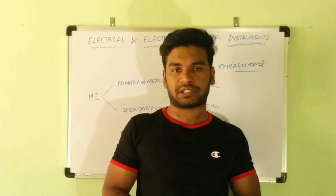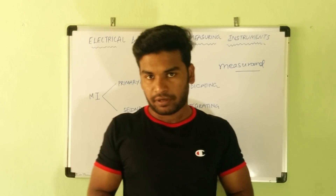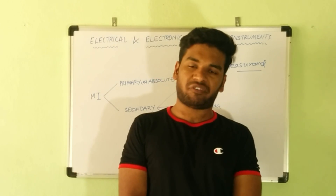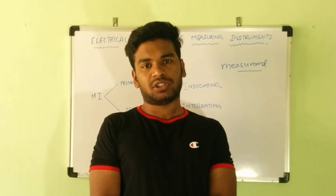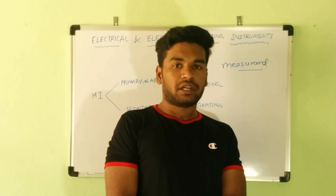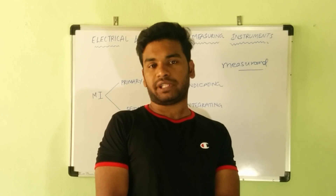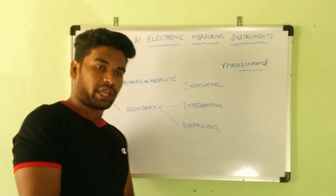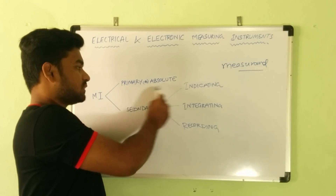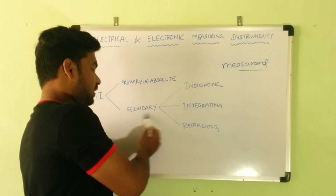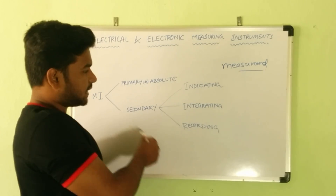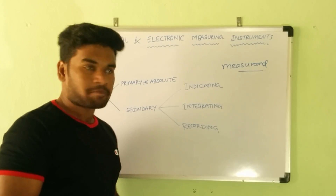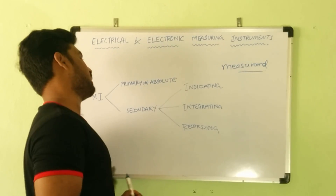So far you might have heard about various electrical measuring instruments — ammeters, voltmeters, power factor meters, frequency meters, and so on. We will now learn more in depth and technically about these instruments. Measuring instruments are basically classified into two categories: the first is primary or absolute instruments, and the other is secondary instruments. Secondary instruments are again classified into indicating and recording types.